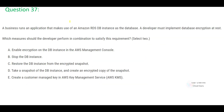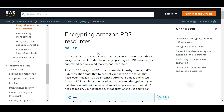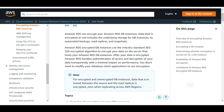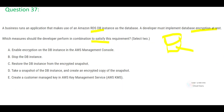Next question: an application makes use of an RDS database and you need to implement encryption at rest. There are two types: encryption at rest and encryption in transit. Encryption at rest means the data sitting in the database is encrypted — it is stagnant, resting there.